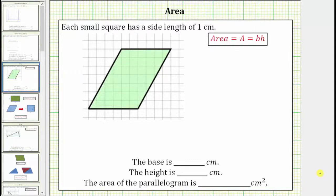We are given a parallelogram on a grid where each small square has a side length of one centimeter. We are asked to determine the length of the base, the height, and the area of the parallelogram.